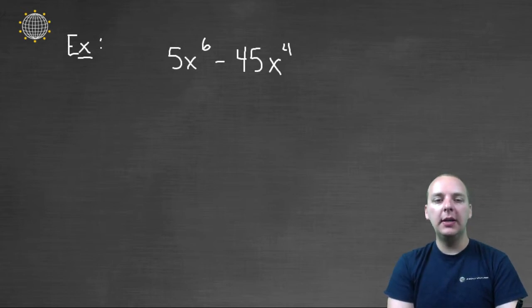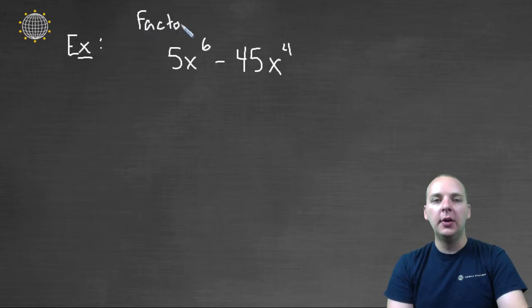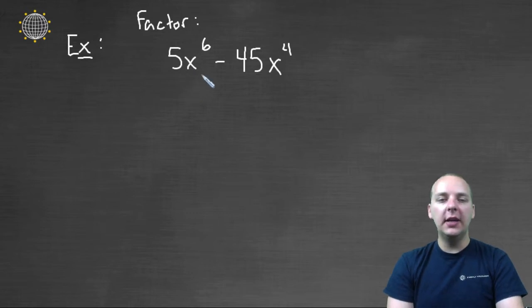So let's say somebody gives us this polynomial and the directions simply say to factor this guy with no hints, no help, no nothing. So the first thing I do before I notice that there's two terms, or before I do any of that, I'm going to look for any common factors, and I see some.